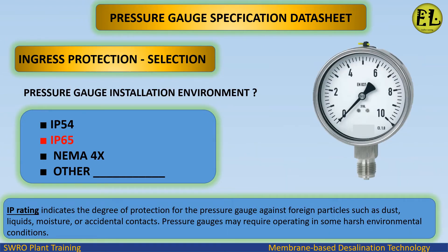Ingress protection selection based on the pressure gauge installation environment. Available ratings include IP54, IP65, and NEMA 4X. The IP rating indicates the degree of protection against foreign particles such as dust, liquids, moisture, or accidental contact, as pressure gauges may need to operate in harsh environmental conditions. We select IP65 for this application.